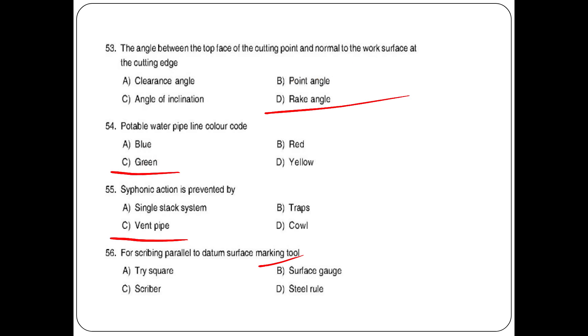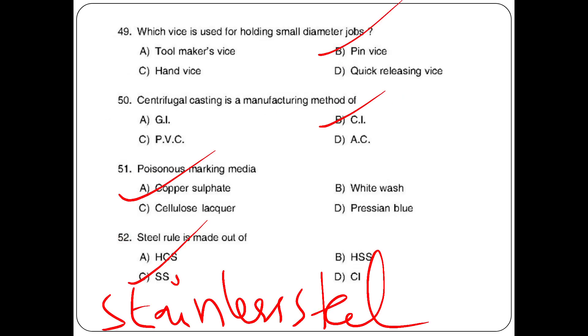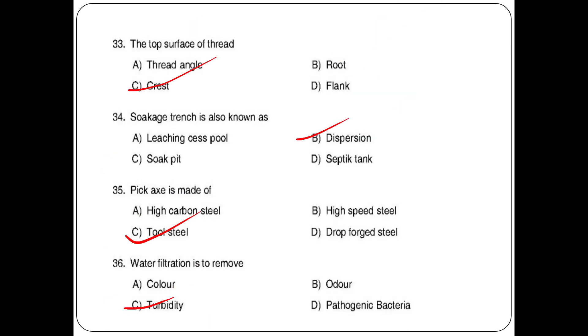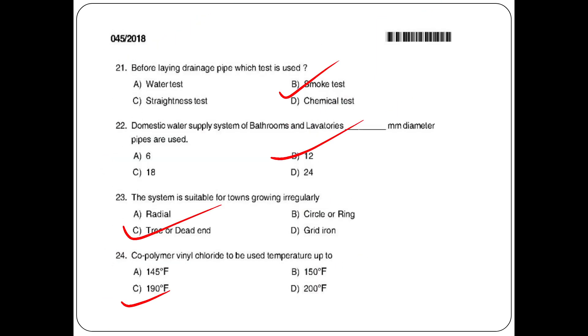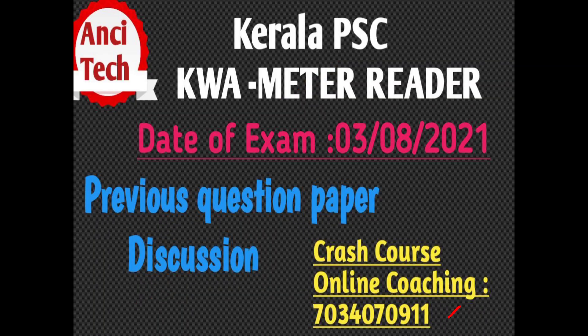Fixing height of sink is 80 cm. These are plumbing questions. We have a one-month crash course covering record class live, PDF notes, questions, and question paper detailed discussion. Thank you.